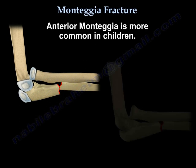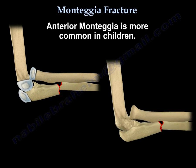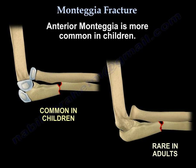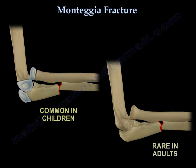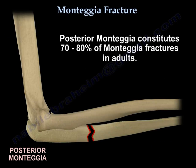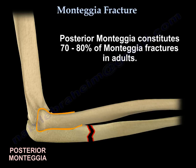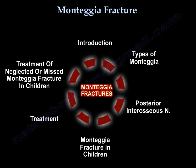Anterior Monteggia is more common in children. Posterior Monteggia constitutes 70–80% of Monteggia fractures in adults. That concludes the introduction. Now we go to the types of Monteggia.